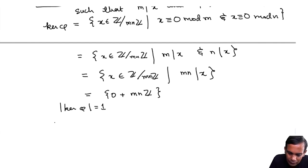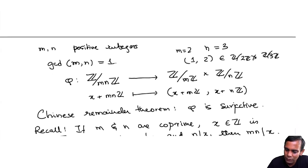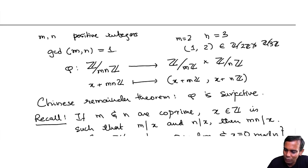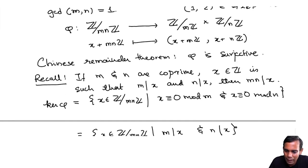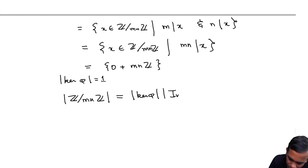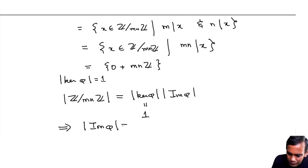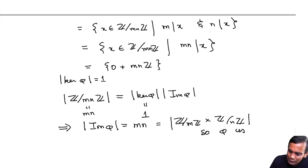Since the kernel of φ has only one element, we apply our counting theorem: the cardinality of G (which is Z mod MNZ, of size MN) equals the cardinality of the kernel (which is 1) times the cardinality of the image of φ. This implies the cardinality of the image of φ is MN, which is the total size of Z mod MZ cross Z mod NZ. Therefore φ is surjective, proving the Chinese Remainder Theorem.